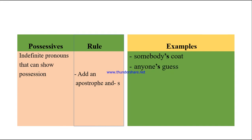If you have an indefinite pronoun — a pronoun not referring to a specific person, place, or thing, like 'somebody' or 'anyone' — and you want to show possession, add apostrophe S. For example: 'somebody's coat' means the coat of somebody; 'anyone's guess' means the guess of anyone.